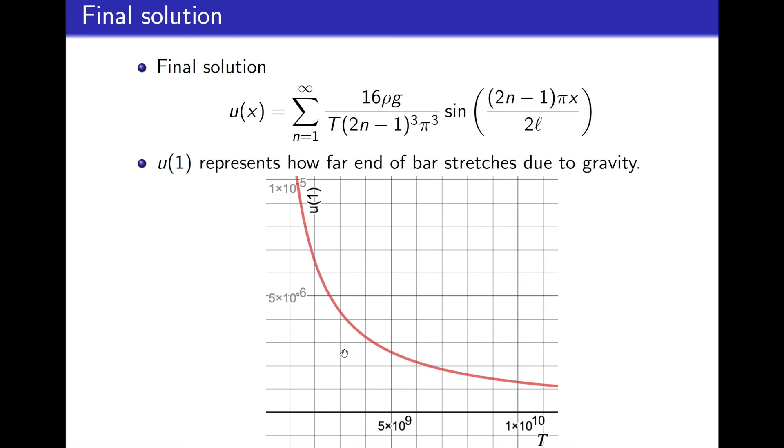But even more than the fact that as the tension decreases, the bar will stretch more, we note that this graph is concave up, which means that as we increase our tension, the amount of stretch is going to actually decay exponentially, which is a very different form of decay than, for instance, decaying linearly or even quadratically.